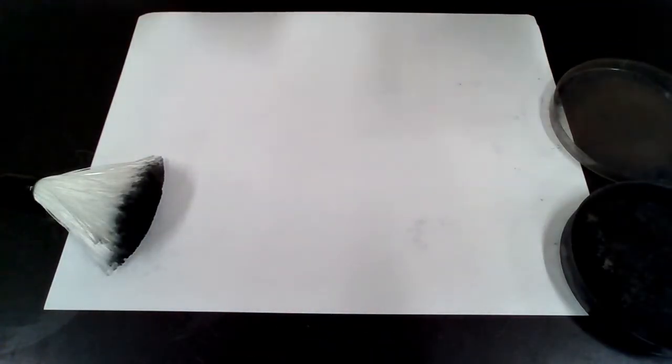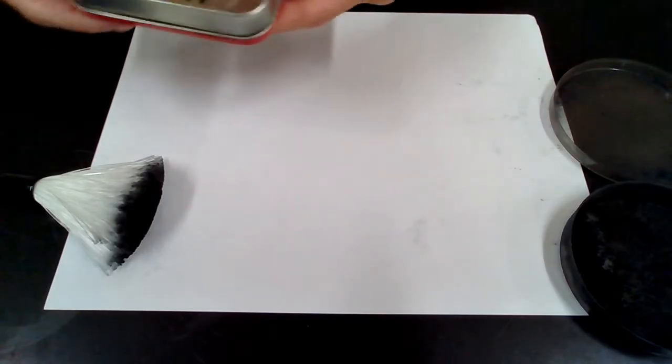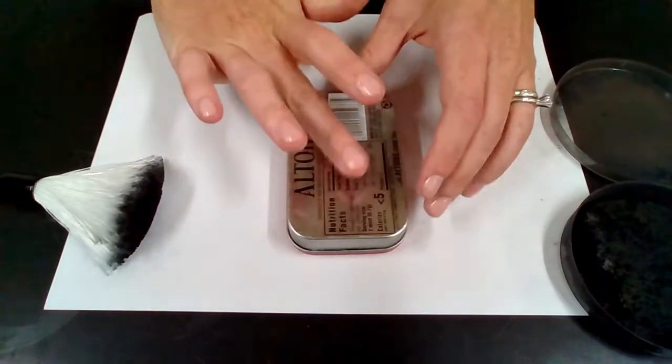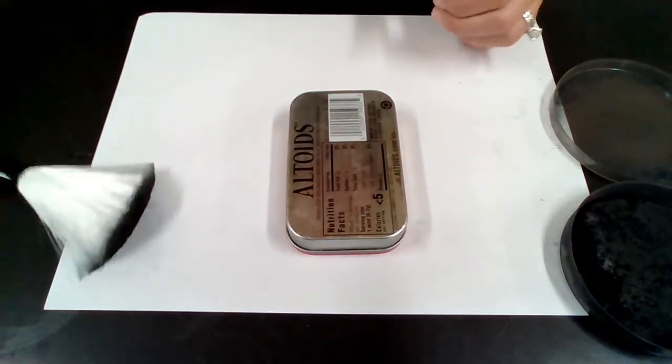One last one with the standard black. Let's do a metal sample. So here is a metal Altoid tin. We're just going to apply a fingerprint directly there.